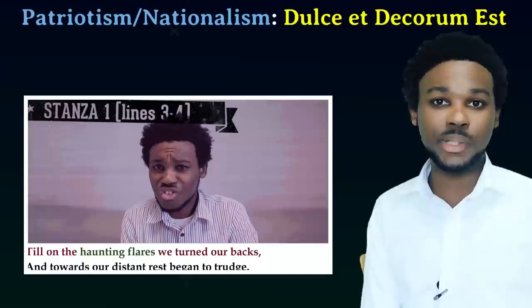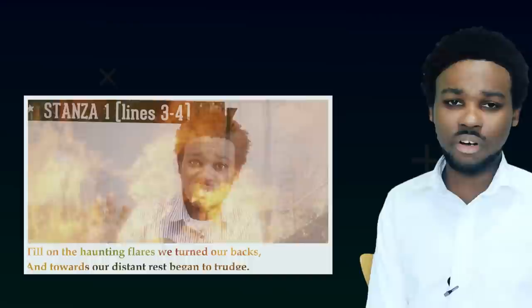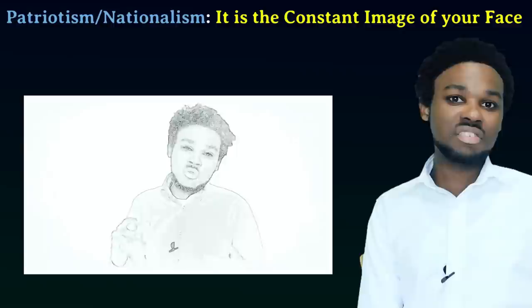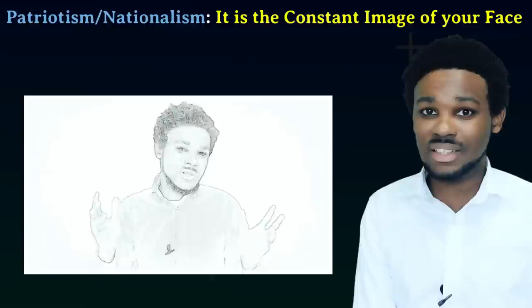In Dulce et Decorum Est, the speaker is challenging what is often seen as the pinnacle of patriotism — who is more patriotic than a soldier who dies for his country? The speaker hates this ideology, having seen the reality and tragedy of war. In It is the Constant Image of Your Face, the speaker loves not one but two countries. He wants to remain loyal to the country of his birth and also to the country in which he has found refuge. His internal conflict is that, even though he wants to love both countries equally, he knows that in order to love one, he must betray the other.